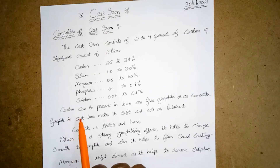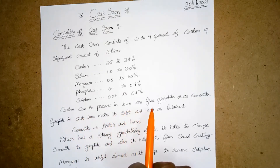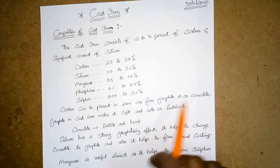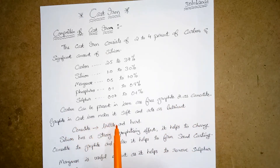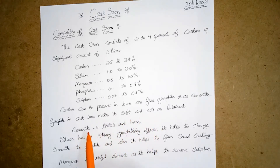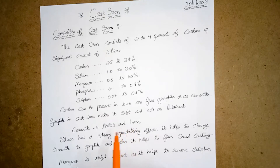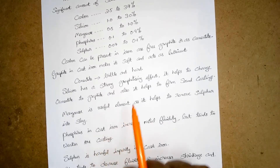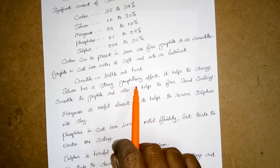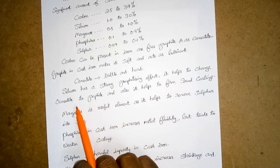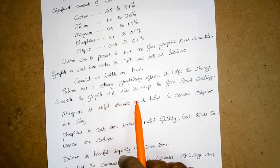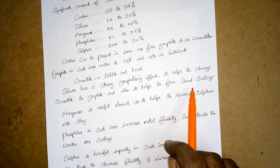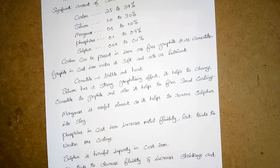Carbon can be present in iron as free graphite or as cementite. Graphite in cast iron makes it soft and acts as a lubricant, whereas cementite in cast iron makes it brittle and hard. Silicon has a strong graphitizing effect — it helps to change cementite to graphite and also helps to form sound castings.